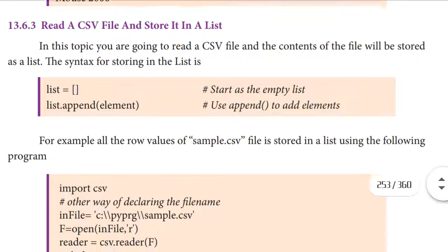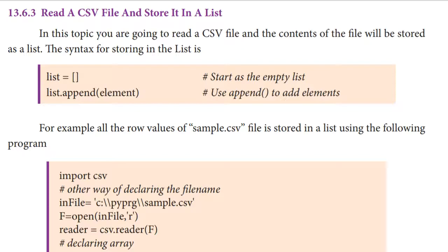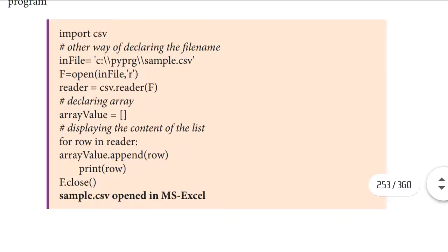Next, we are going to see how to read a CSV file and store it in a list. In this topic, you are going to read a CSV file and the content of the file will be stored as a list. The syntax starts with an empty list. We use list.append with an element inside the bracket to add elements into the list. For example, all the row values of sample.csv file are stored in a list using the following program.